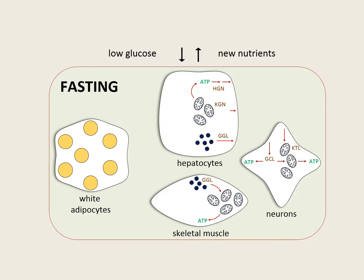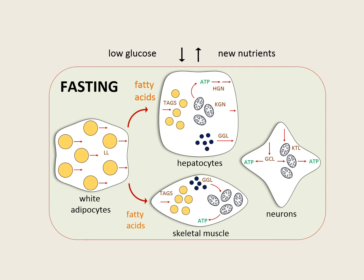During fasting, the fatty acids produced by lipolysis in the adipose tissue are released into the circulation and internalized by other cells, such as myocytes, hepatocytes and cardiomyocytes, and mostly re-esterified in lipid droplets. Then, when metabolic energy is required, these lipid droplets supply fatty acids to mitochondria to produce ATP.